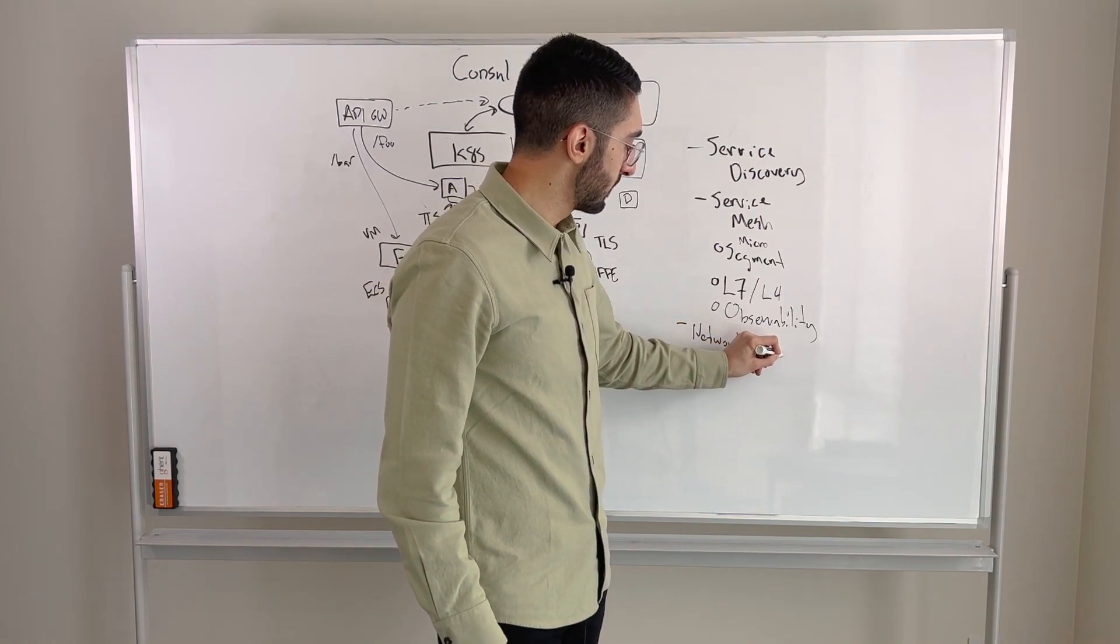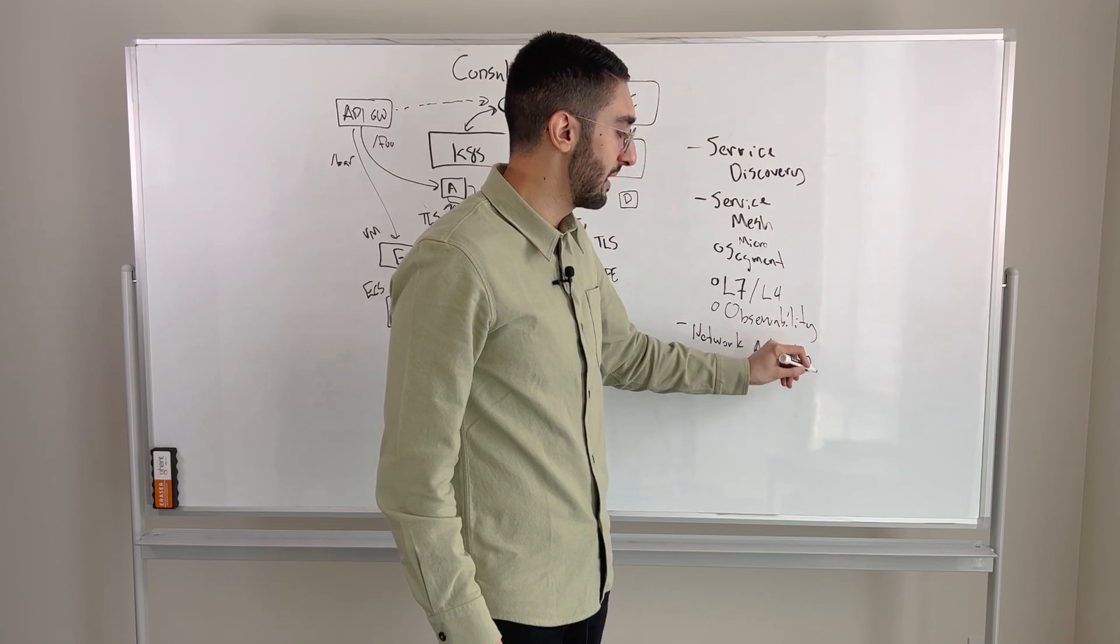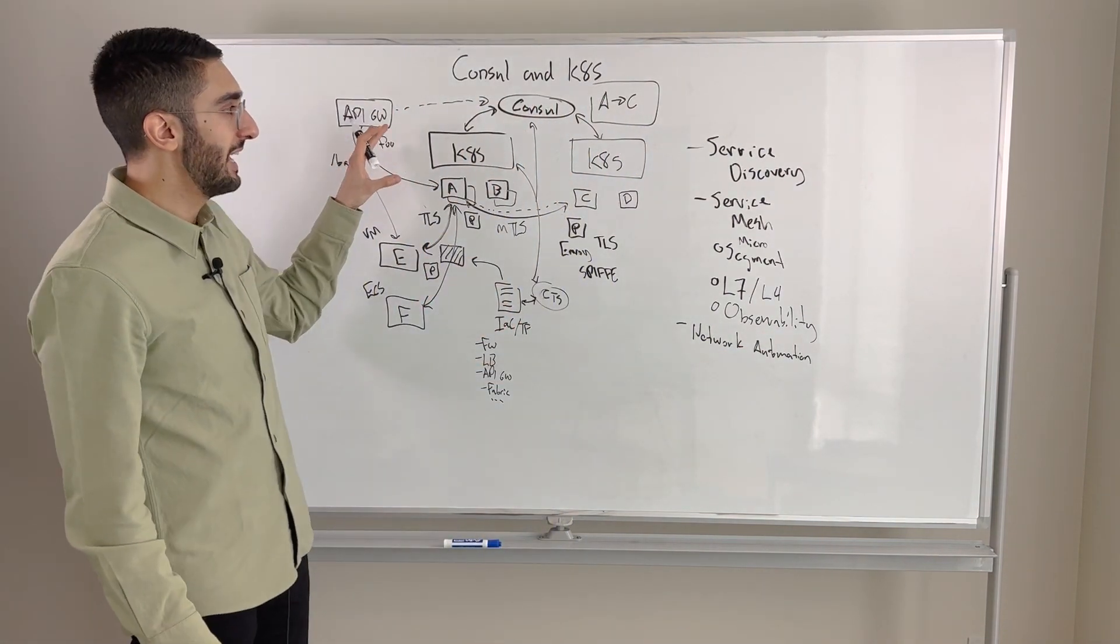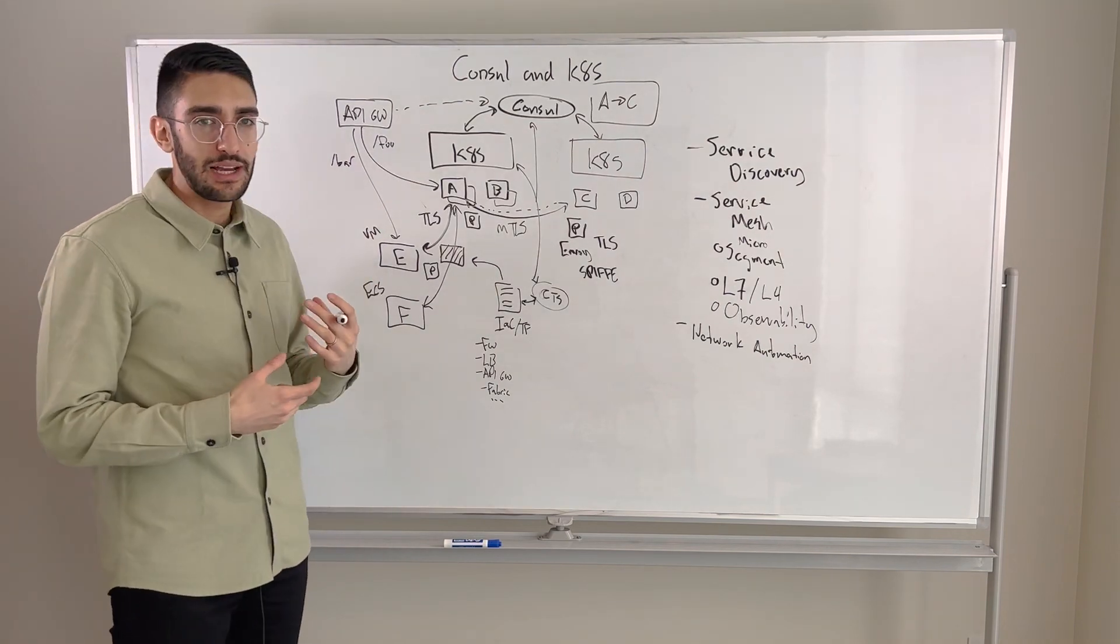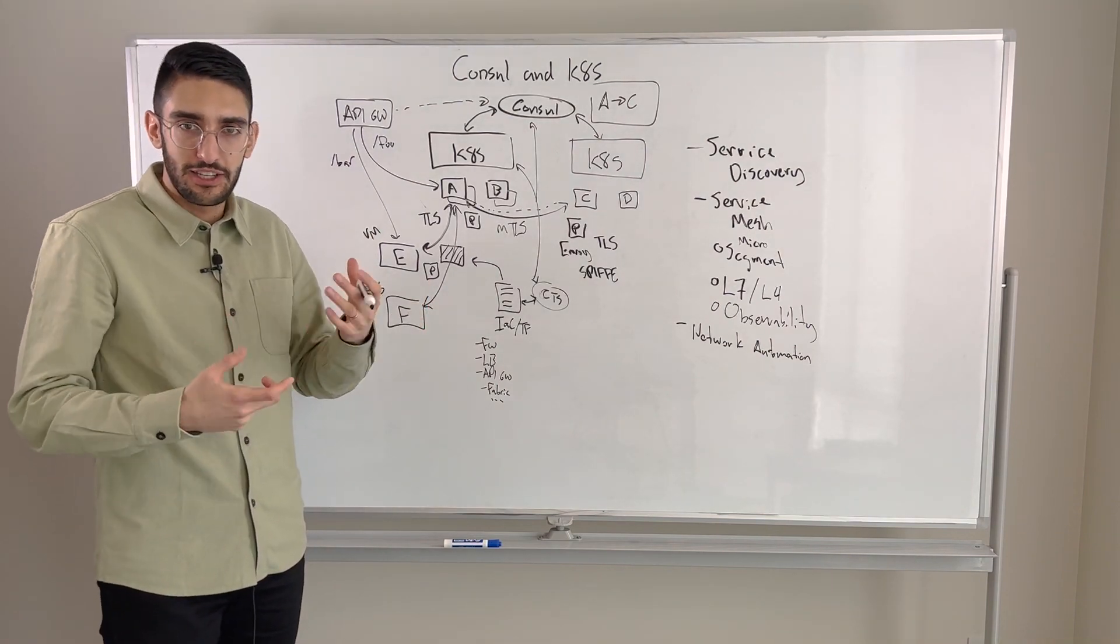So all of this together is really how we think about doing service networking end-to-end and where Consul integrates and supports Kubernetes. Now, if you're asking, okay, great, where are the start points? How do users actually interface with this, deploy this, manage this? There's a number of different ways.